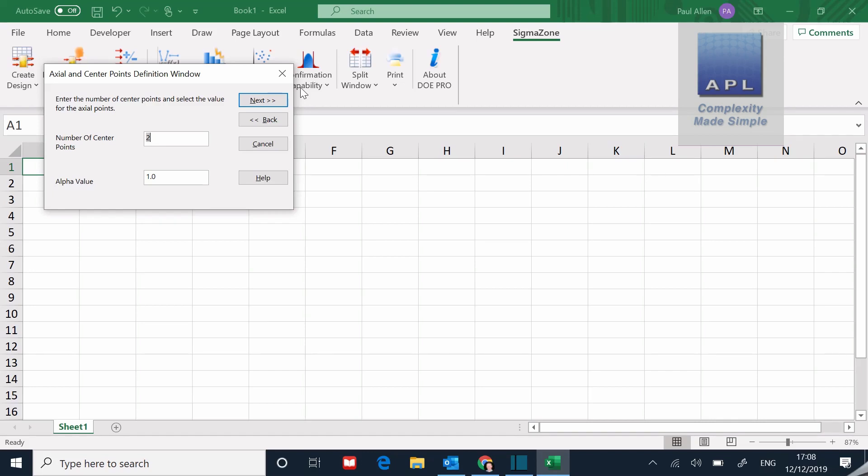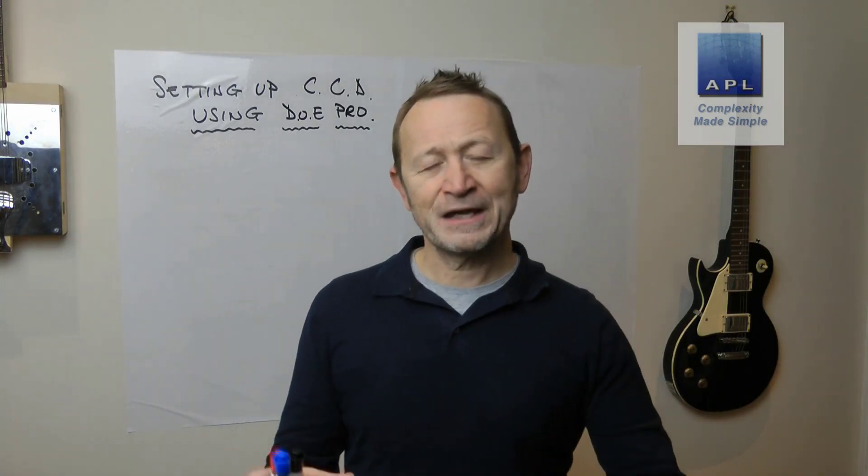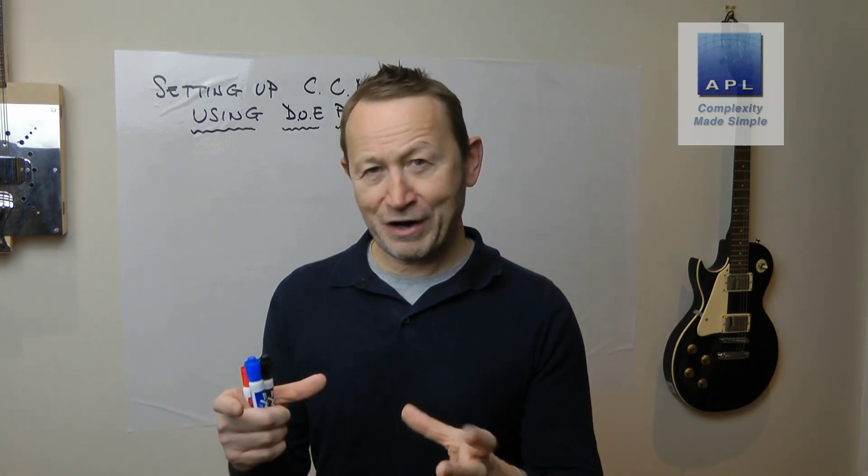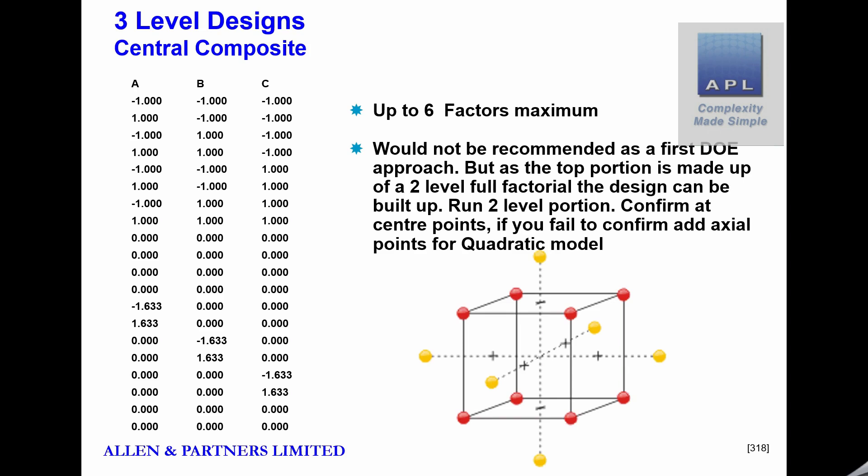But it also asks me how many center points do I want and what alpha value do I want. Now let's talk about the alpha value because the central composite design has a very special pattern. If you look at this diagram here, you can see that what we're going to do, we are going to test the eight corner points. So we're going to test the corner points of the DOE. So a normal two level DOE, part of it in the central composite is a normal two level full factorial, so we're going to test those eight corner points.